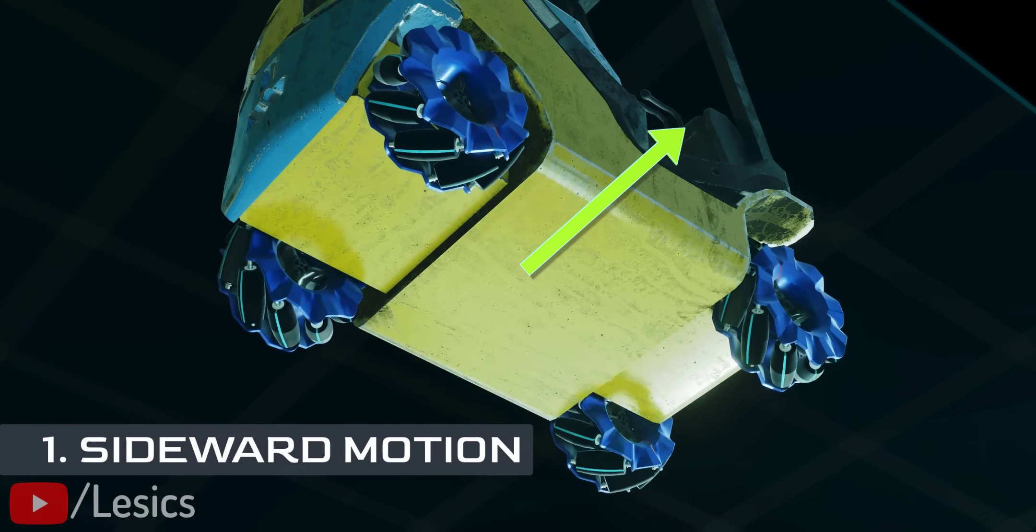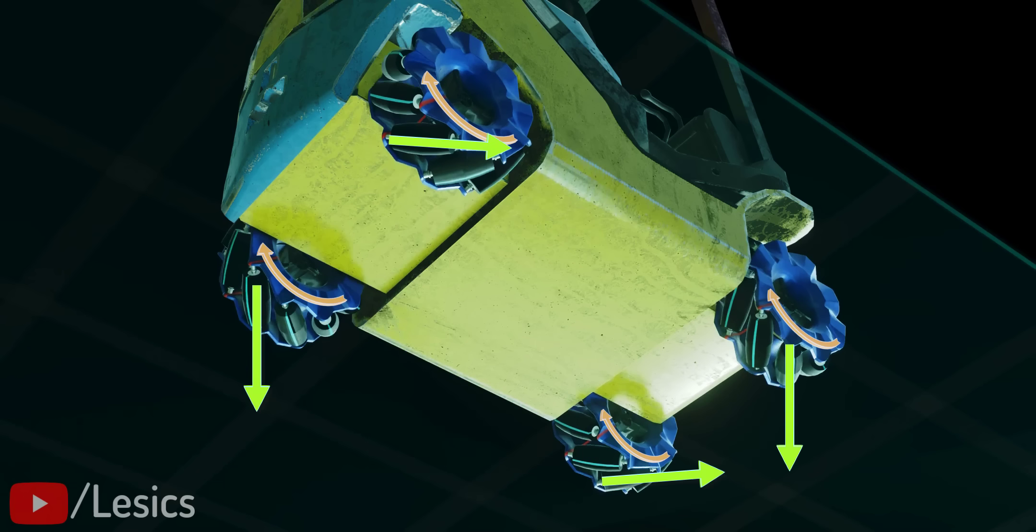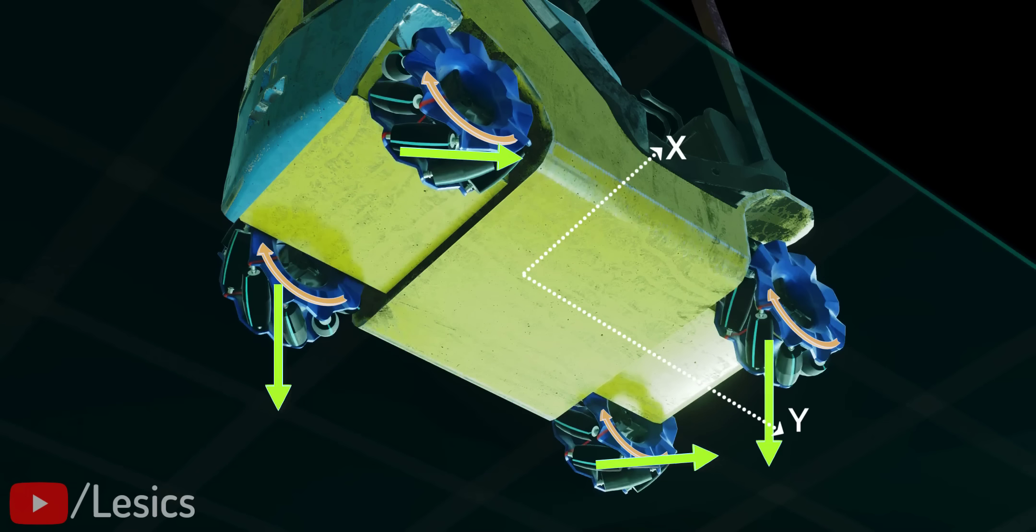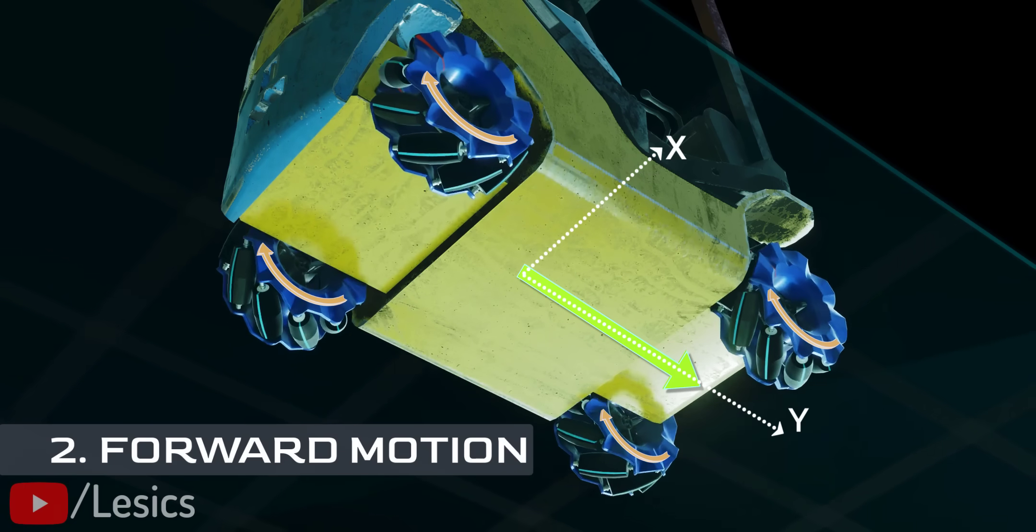Now, consider the case of all the wheels rotating in the same direction. It is quite clear that the X-components of force are getting cancelled here and the Y-components get added up. The net result? The car will move in Y-direction.